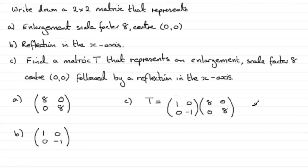And once you've got that answer, you would then do the reflection on that resulting shape. So all we need to do then is just multiply this out in the usual way — it's going to be rows times columns.